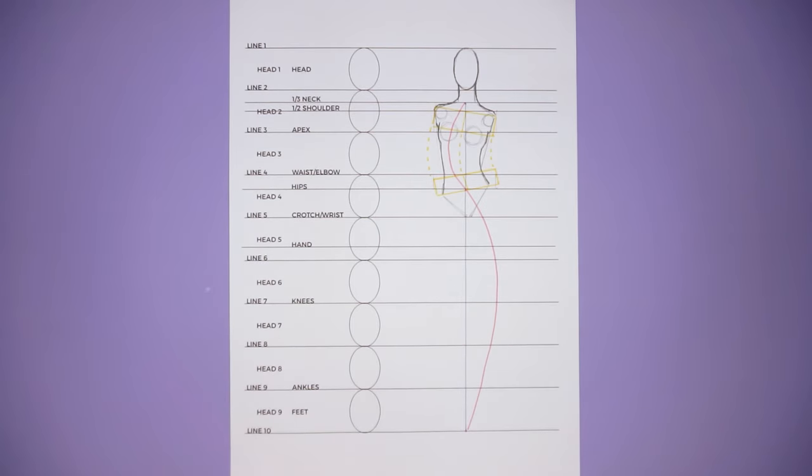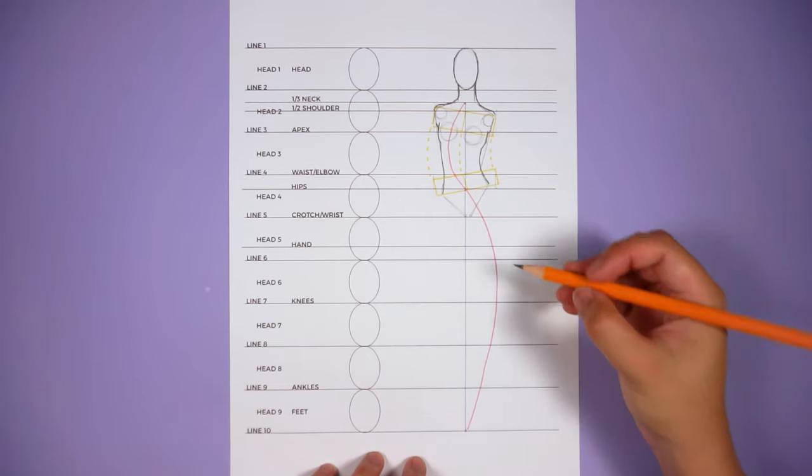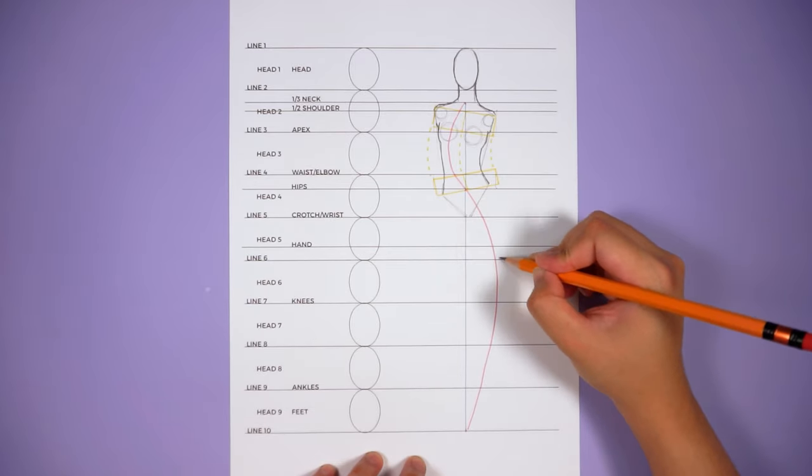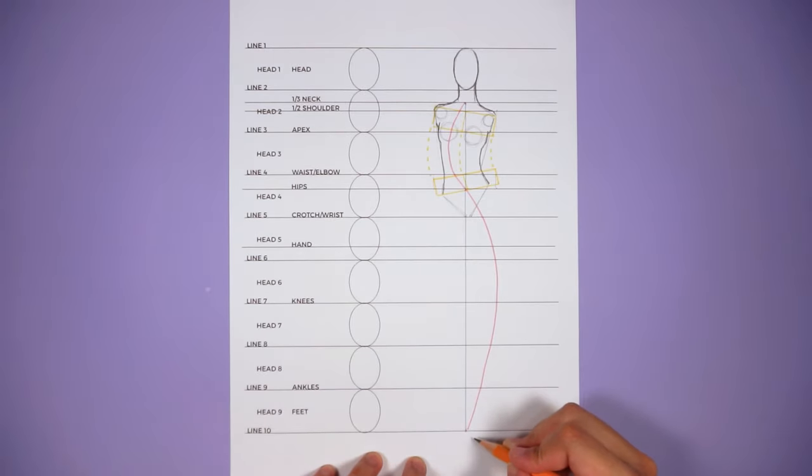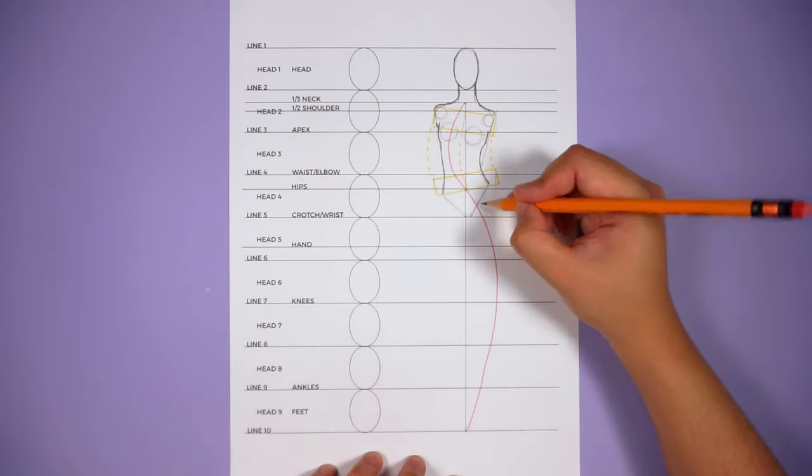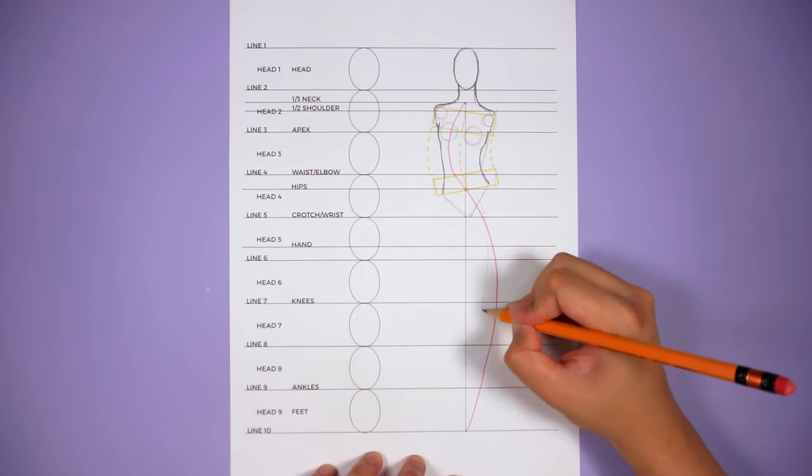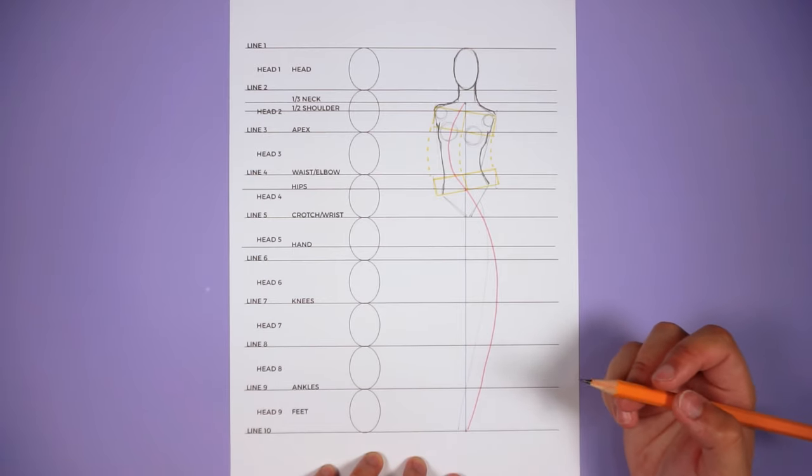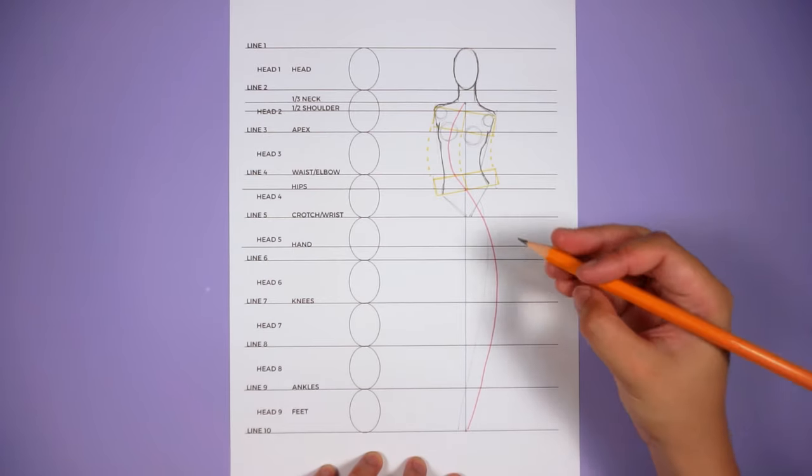The next thing that I draw is the support leg. This leg is located on the side where the S curve is on the bottom half of the body. So for this demonstration, the S curve finishes on the right side of the balance line. So the right leg becomes the support leg, meaning it carries most of the body weight.